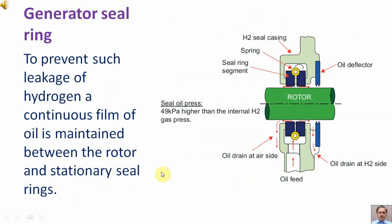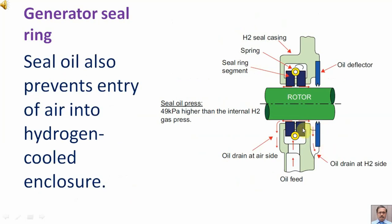To prevent such leakage of hydrogen, a continuous film of oil is maintained between the rotor and stationary seal rings. Seal oil also prevents the entry of air into the hydrogen-cooled enclosure.